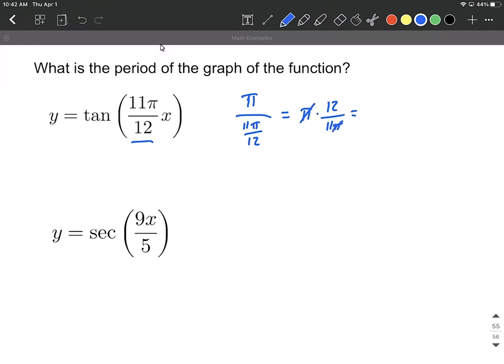The π's get to cancel out in this case, so we're going to say 12 over 11 is going to be the period for the function that we're given.